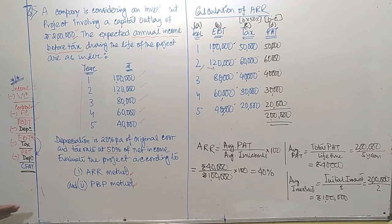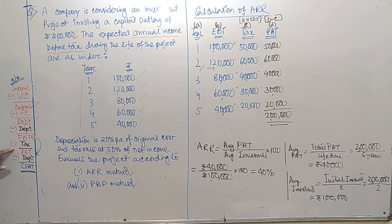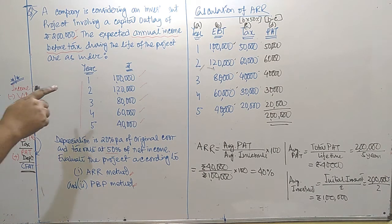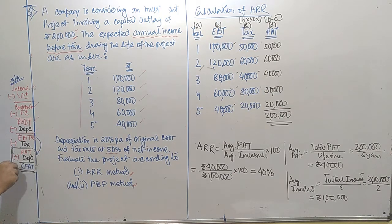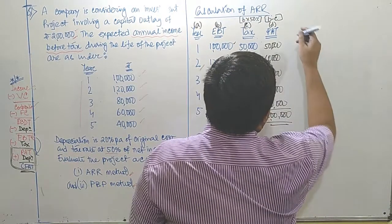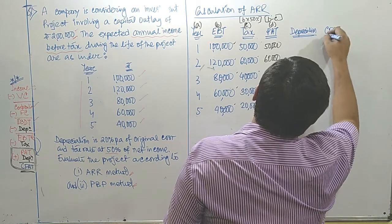After calculating ARR, the next job is to calculate the payback period method, PBP. For ARR we needed the PAT column; similarly for PBP we need the CFAT column. CFAT is very important to calculate PBP of a project. From the PAT column, we convert it to CFAT by adding depreciation: PAT plus depreciation gives CFAT. We need to add a depreciation column.